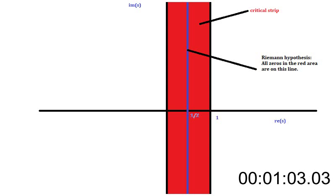These zeros are located in the critical strip, where the critical strip is a set of complex numbers with a real part between 0 and 1. The Riemann hypothesis then states all the zeros of this function in the critical strip have a real part equal to a half.